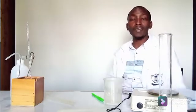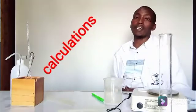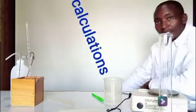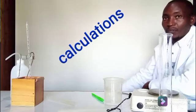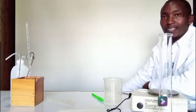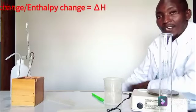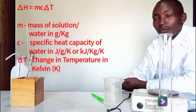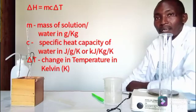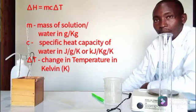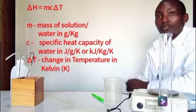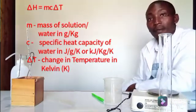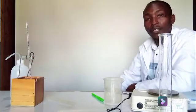Now we need to go to the calculations. The change in heat, or what we call the enthalpy change, is calculated using the formula: the mass of the liquid or solution multiplied by the specific heat capacity, then multiplied by the change in temperature. The m in the formula is the mass of the water in which the heat change occurred.